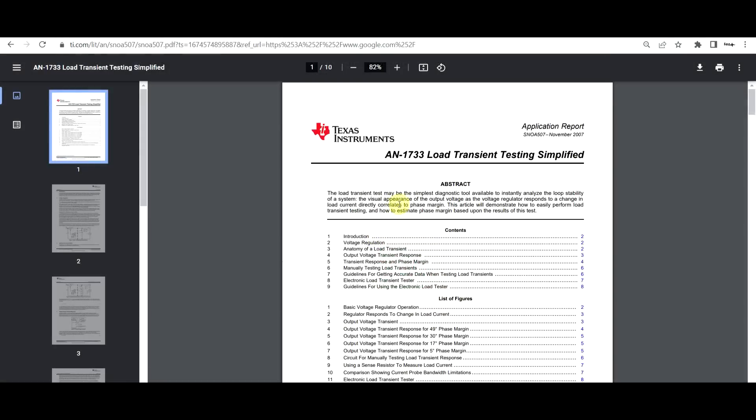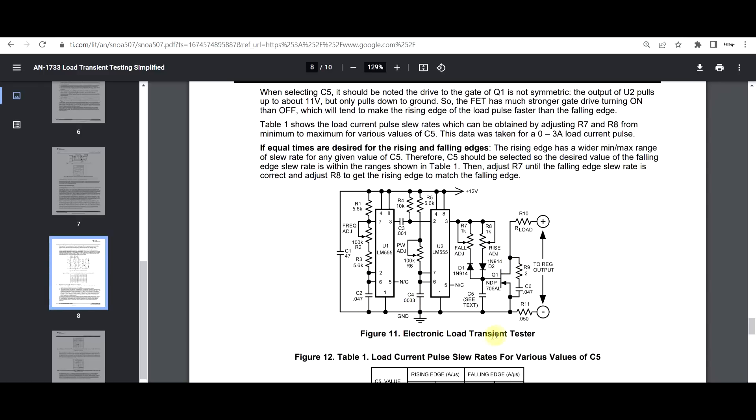Now a more complex circuit can be found in this application note 1733 from Texas Instruments, in which a schematic is given for an electronic load. So where the load is being switched by a switching transistor, and the signal generator part is included into the circuit. So it's built with dual LM555s, and using the various adjustment elements you can adjust the frequency, pulse width, and even the rise and fall times of the switch. So depending on your needs, a more complicated or simple circuit can be built.